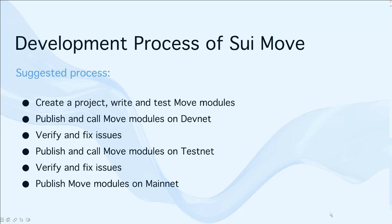The suggested development process is: firstly, create a project, write and test move modules, then publish and call move modules on the DevNet. Verify and fix issues if anything happens. After that, publish and call move modules on the TestNet, and verify and fix issues there. Finally, if everything goes fine, publish the move modules on the MainNet.